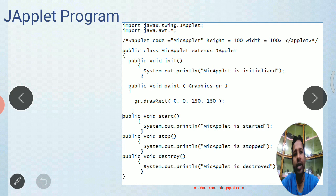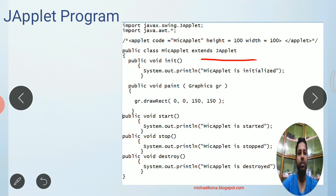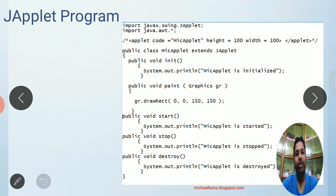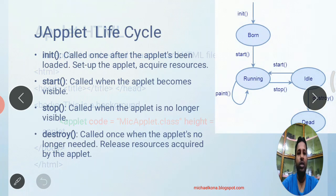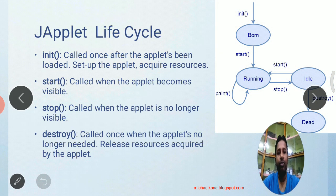The first step is writing a class by extending the existing JApplet class. When you are creating an applet, you have to create a class by extending JApplet. The second step is to override its lifecycle methods. These are the lifecycle methods of an applet.